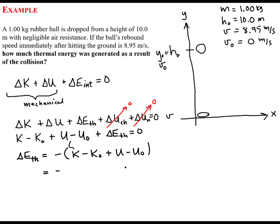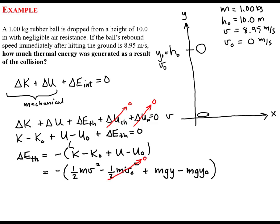So the change of thermal energy equals minus one-half the ball's mass times its speed upon hitting the ground squared, minus one-half the ball's mass times its initial speed squared, plus the final gravitational potential energy minus the initial gravitational potential energy. Since the ball was released from rest, its initial speed was zero, so its initial kinetic energy was zero. Immediately after the ball collides with the ground, its height is zero, so its final gravitational potential energy is also zero.